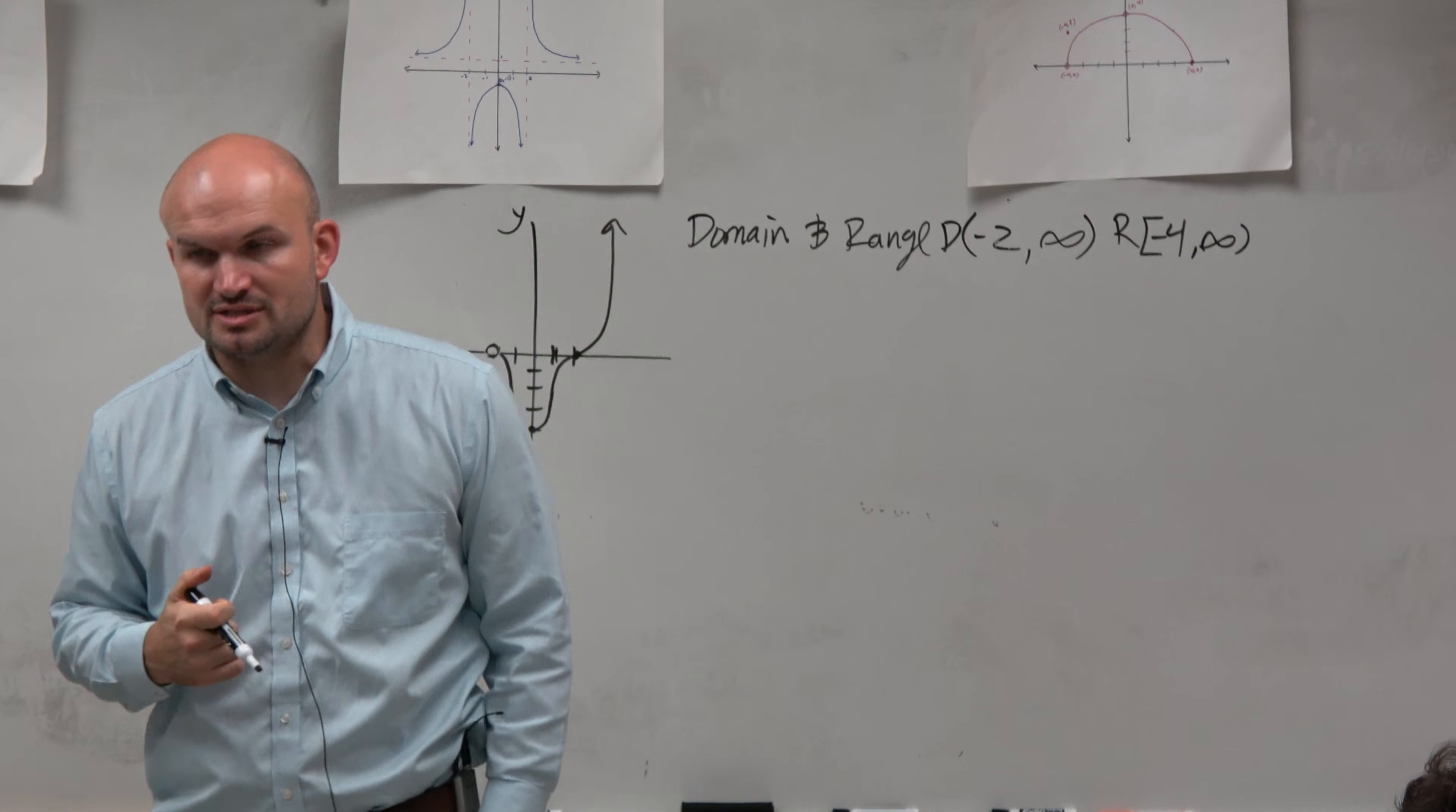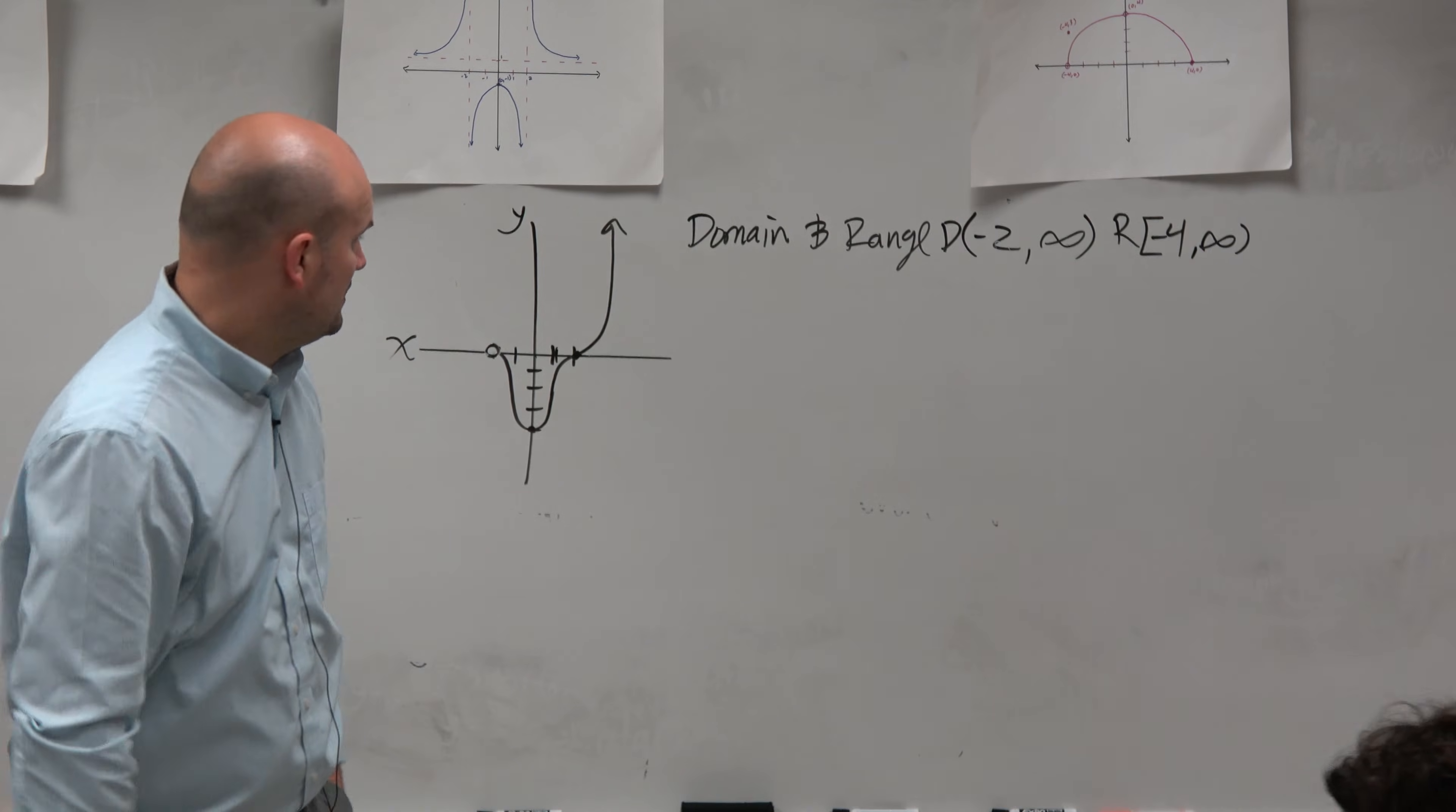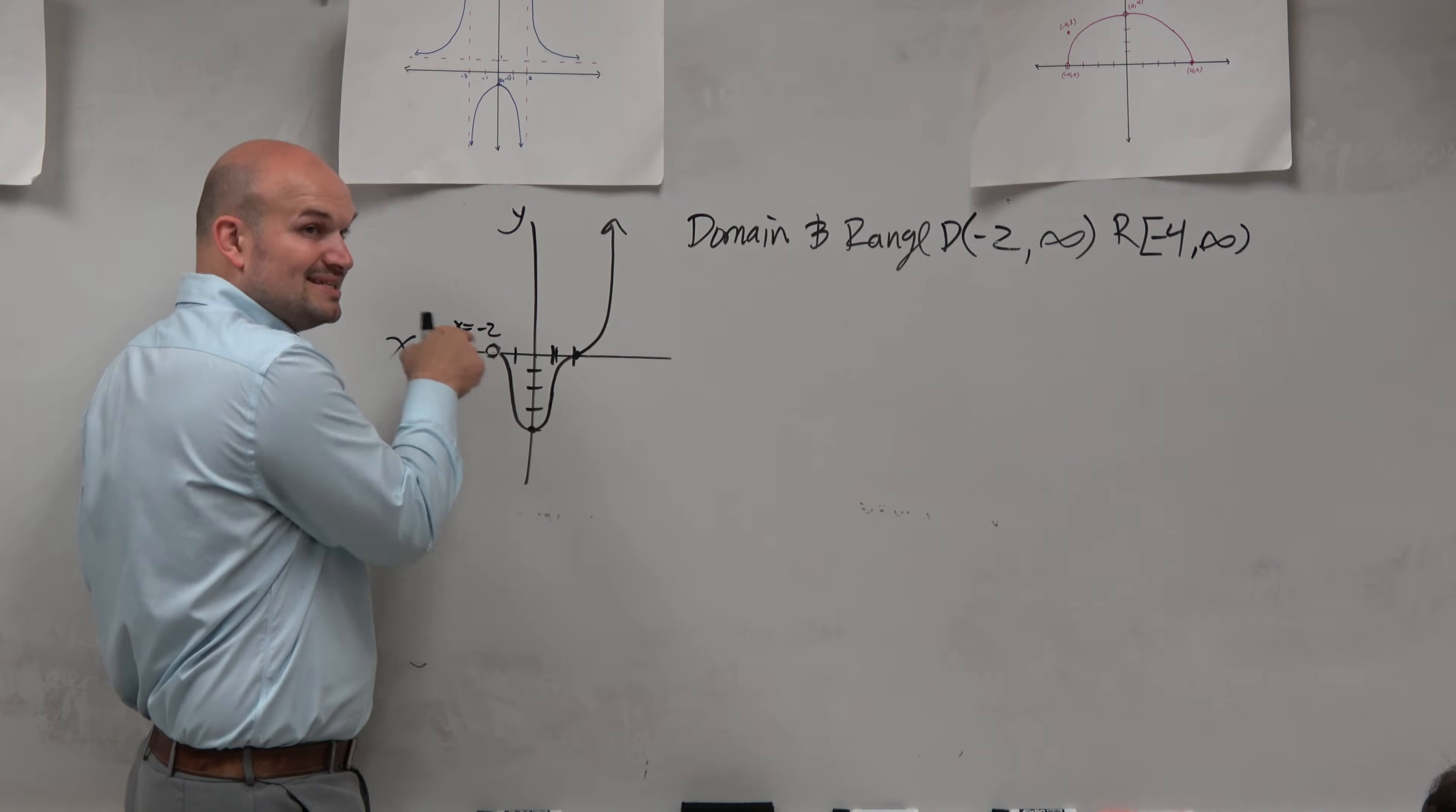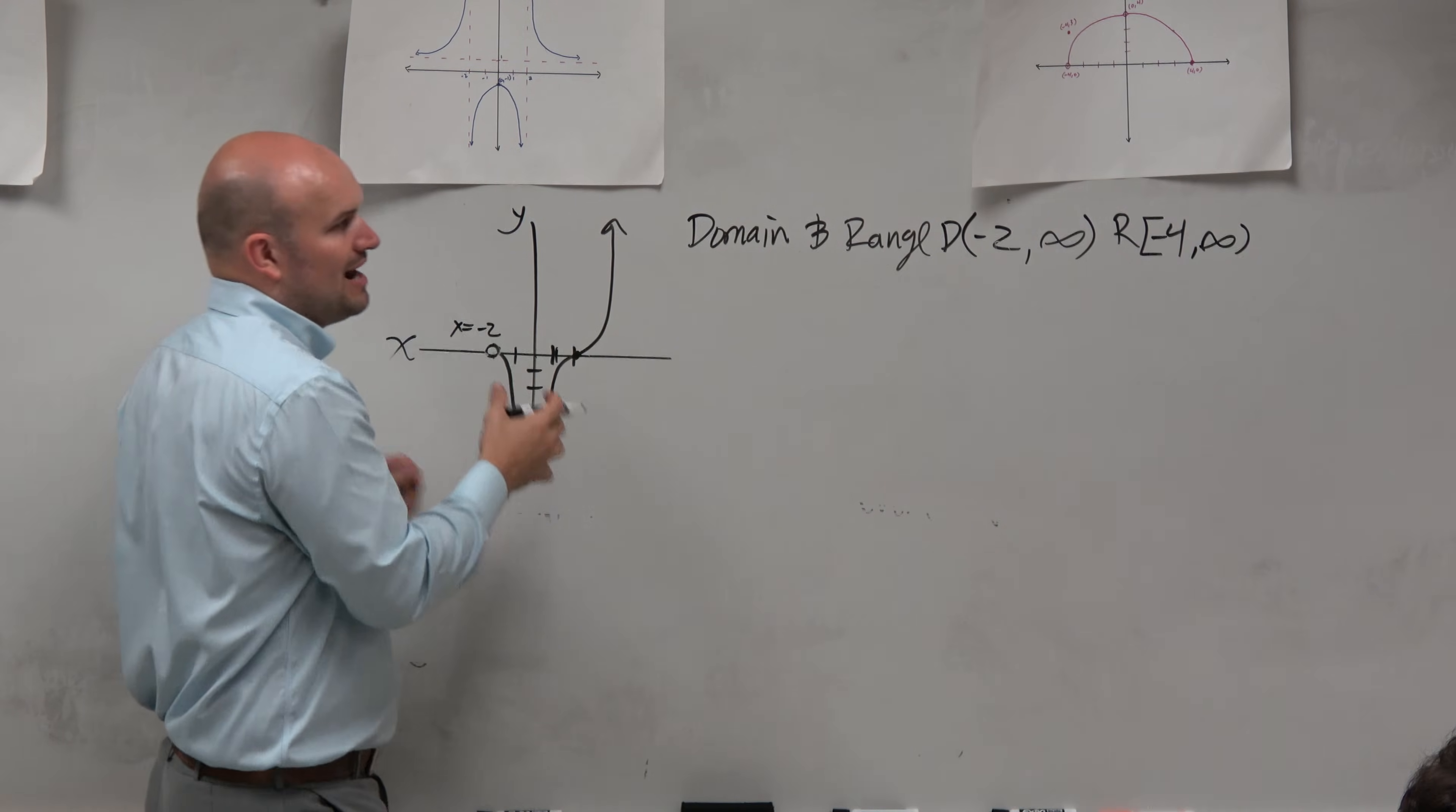Before I move on, does anybody have any questions on understanding domain and range? Yes. The difference in the bracket is the difference. This is negative 2, x equals negative 2. This point does not exist. Therefore, negative 2 is not an x value on the graph. So it's not a part of the graph.